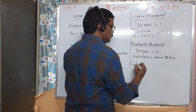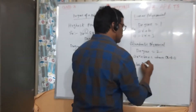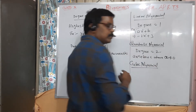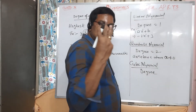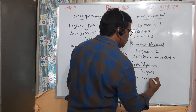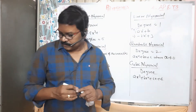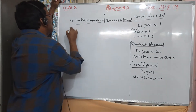Just reminding you of topics from 9th class — a cubic polynomial has degree 3, of the form ax³ + bx² + cx + d.